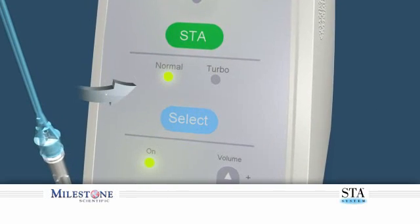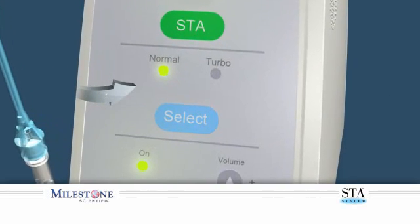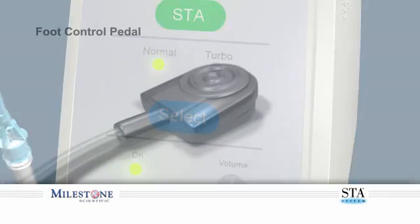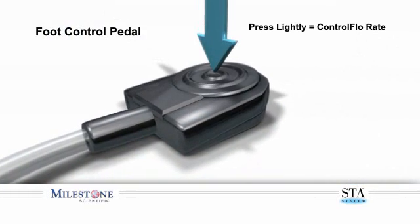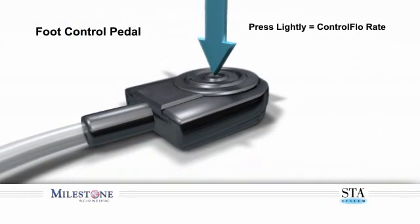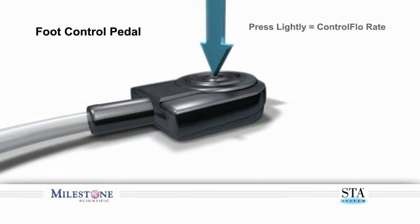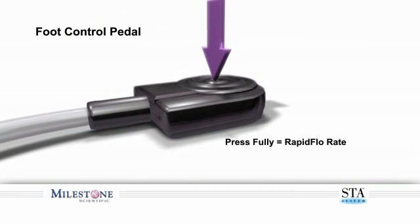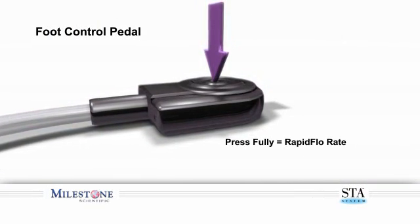In the normal mode, the foot control has two distinct foot control positions. Depressing the foot control lightly allows you to enter the control flow rate. Fully depressing the foot control allows you to enter the rapid flow rate.